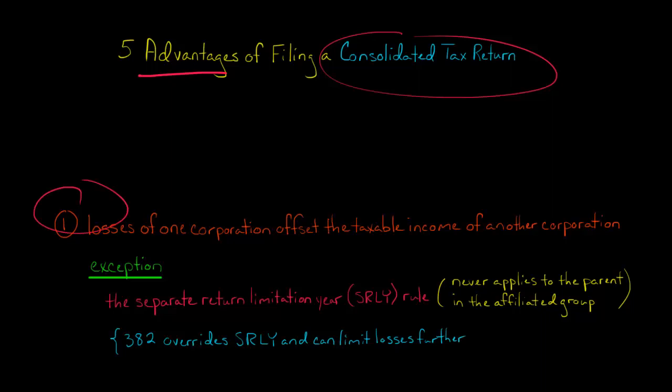The first advantage is that losses of one company are going to offset the taxable income of another company in the same consolidated group. Let's say you have Corporation A, you have Corporation B, Corporation A has $80 million of taxable income.